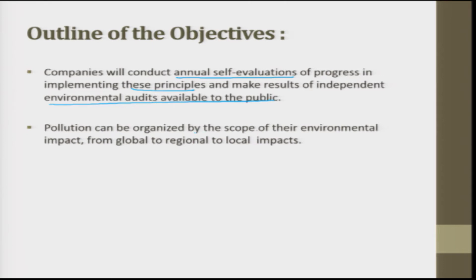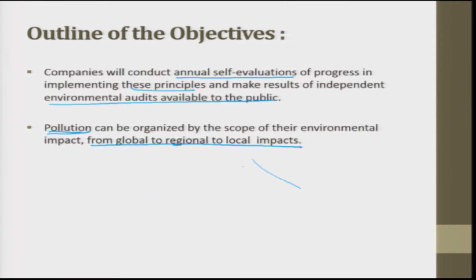Pollution can be organized by the scope of its environmental impact from global to regional to local. For example, in Delhi there is a huge pollution problem. Cities like Chennai, Mumbai, or Calcutta have sea nearby so fresh air has some scope of coming in, whereas Delhi is surrounded by the Himalayas on one side and land on other sides, making it very difficult for fresh air to come in. The pollution there is very dominating.